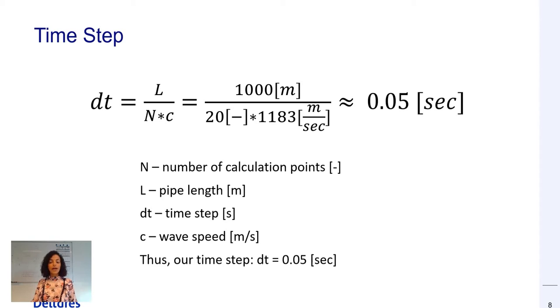It's important to note that the number of the calculation points n must be an integer to ensure that a number of elements of equal length fit in the total length of the pipe. Thus, Wanda automatically adapts the wave speed according to the chosen time step to ensure that n is an integer.